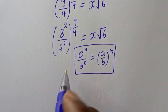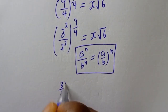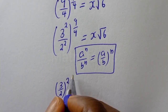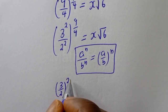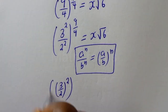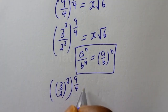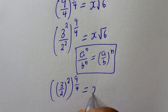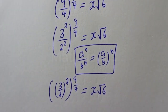Then this can be written as 3 over 2 to the power of 2, all raised to the power of 9 over 4, is equal to s root 6.